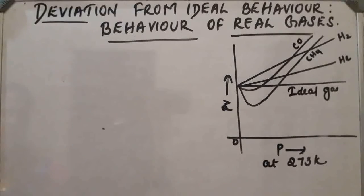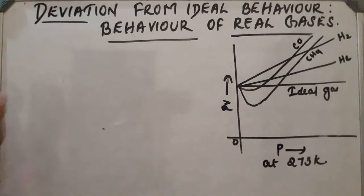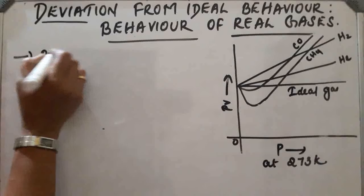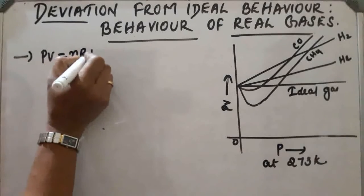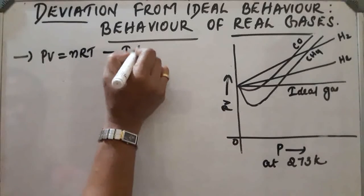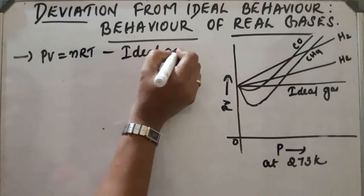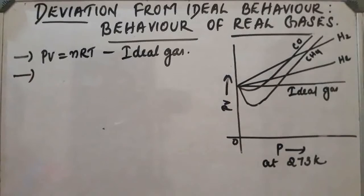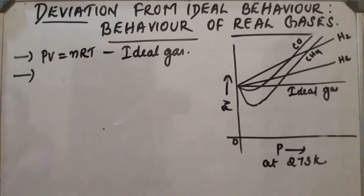Deviation from ideal behavior — behavior of real gases. A gas which obeys the ideal gas equation, that is PV = nRT, at all temperatures and pressures is called an ideal gas. However, there is no such gas which obeys this ideal gas equation under all conditions of temperature and pressure, so we can say this concept is only theoretical or hypothetical.